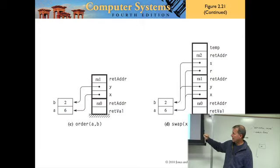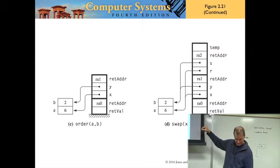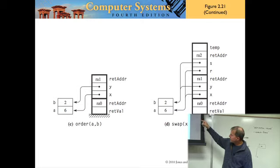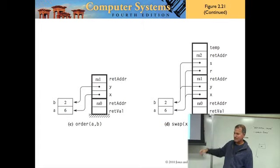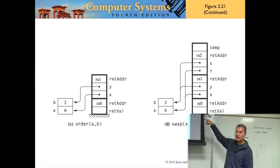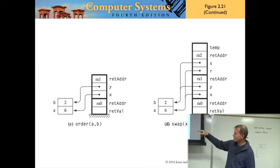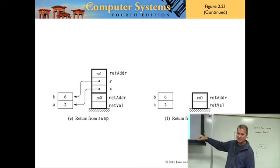Order then calls swap, which is also call by reference. S refers to x's target, and x refers to a, so s effectively refers to a. Similarly T refers to b. When swap finishes and we return, those values have been swapped because the references were actually changing the values at the original locations.